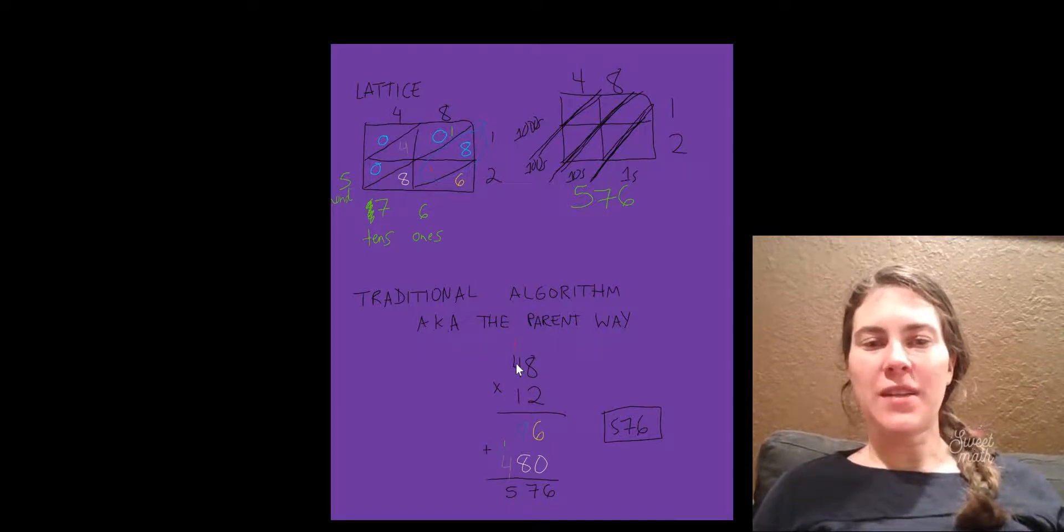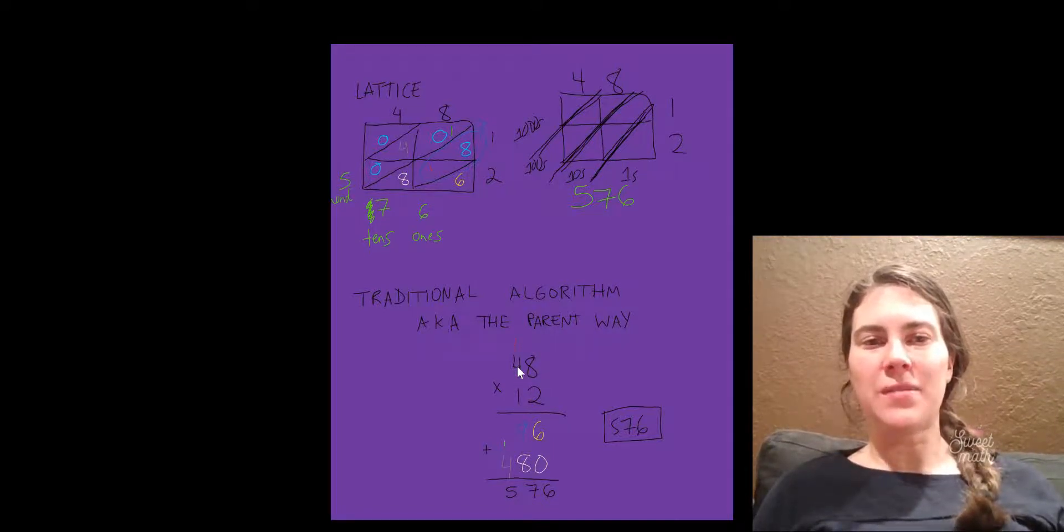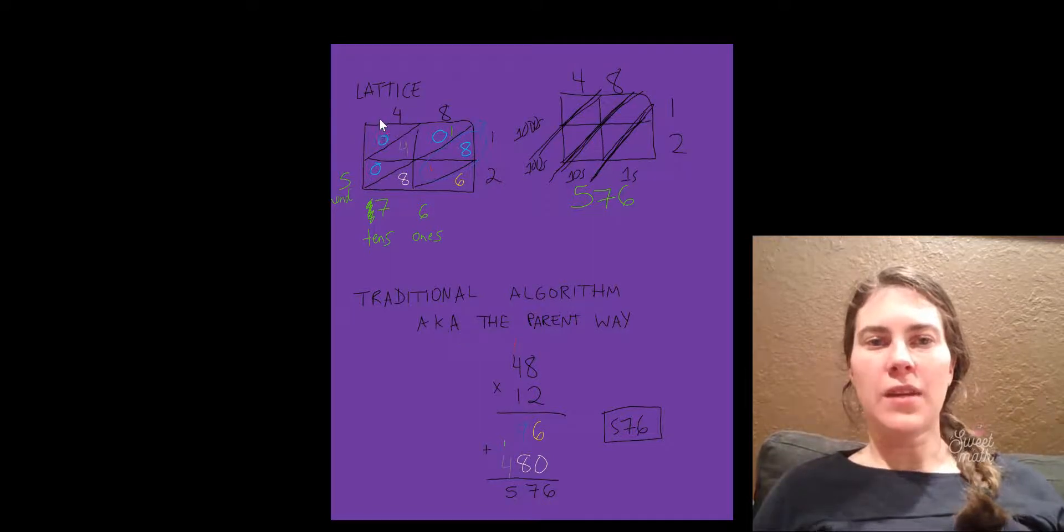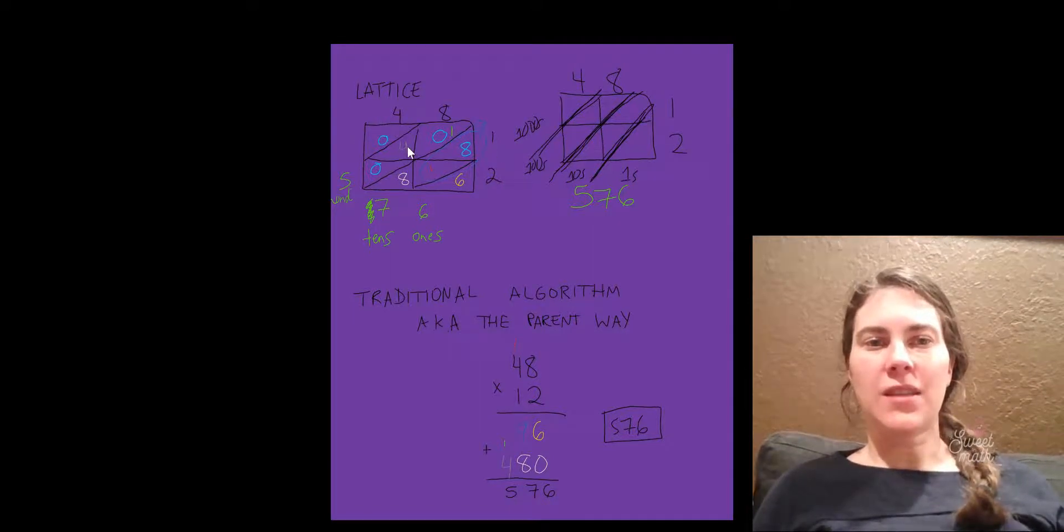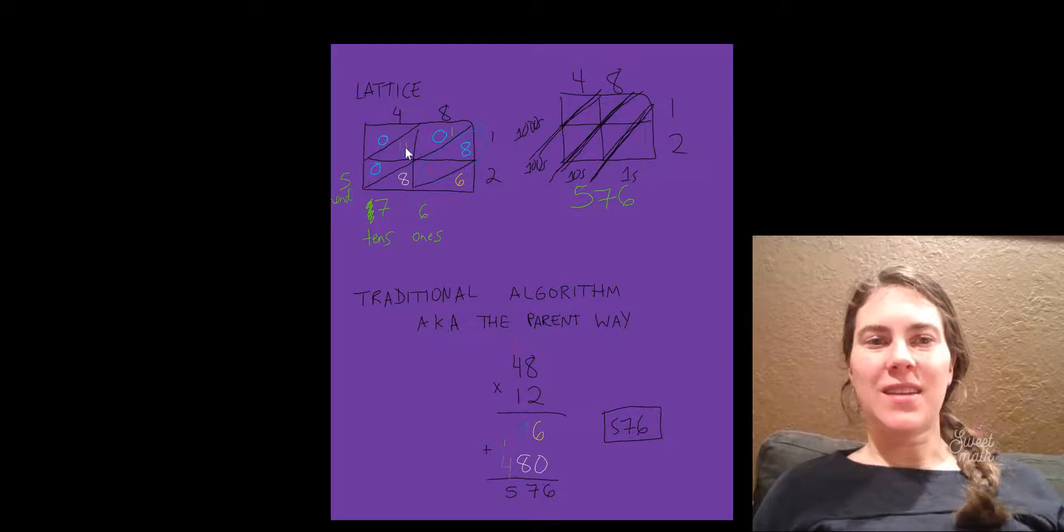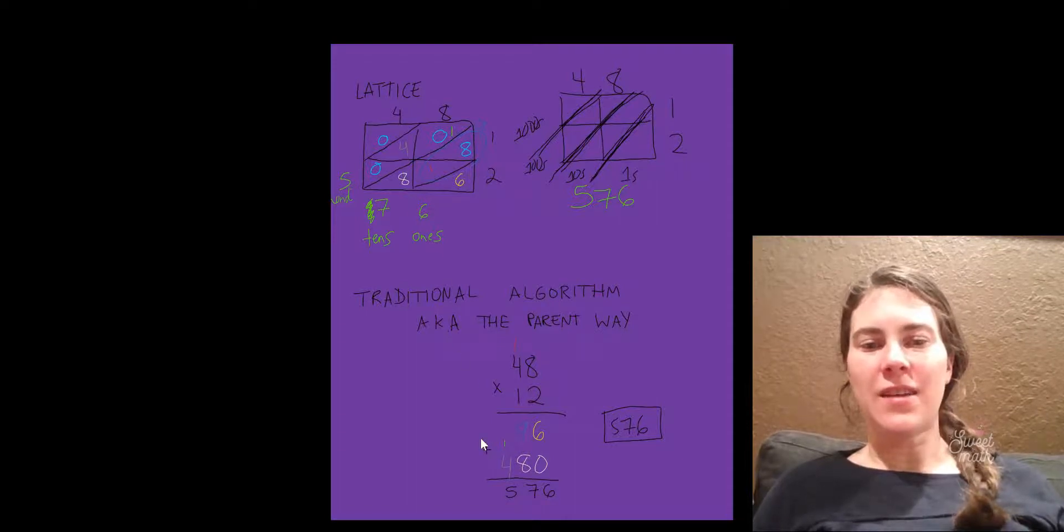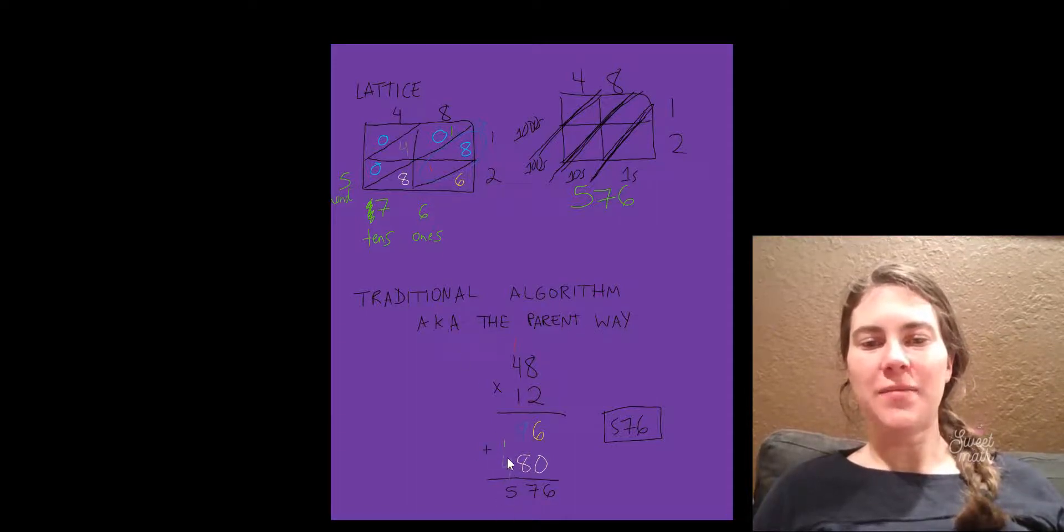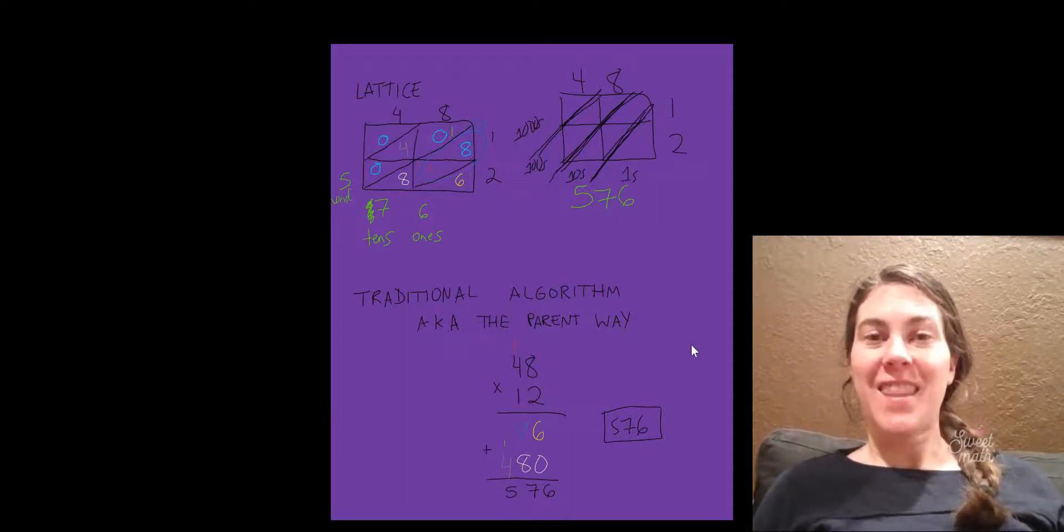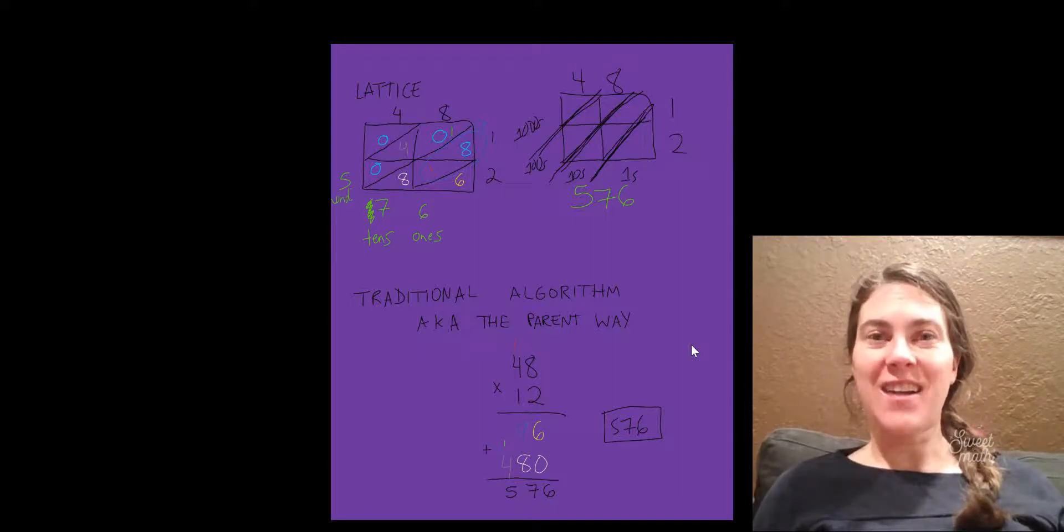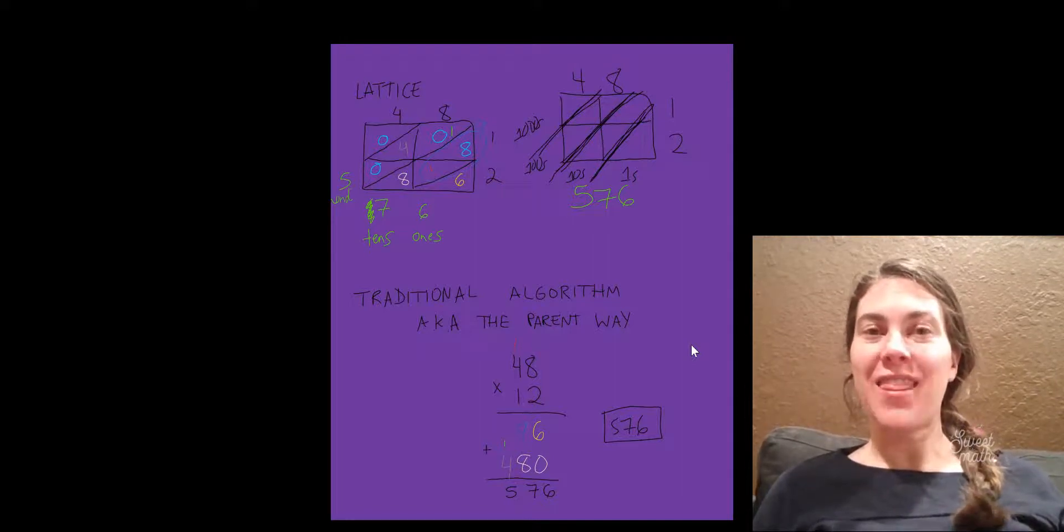Then we do the 4 times the 1, which is really 40 times 10. 4 times 1 makes 4, but this is now in the hundreds diagonal. So this is 400. Down here it's 400. And that is how these two methods are actually the exact same thing.